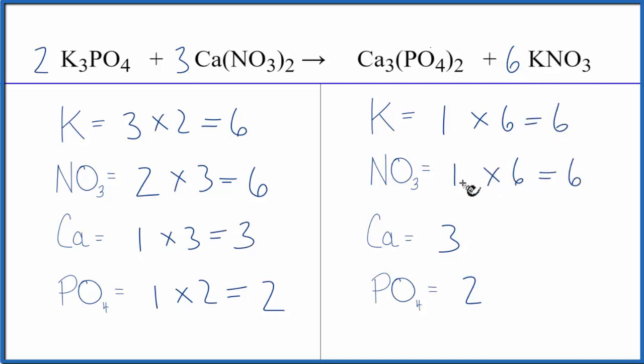This equation is balanced. You can see that it makes it a lot neater and saves time to count these polyatomic ions as one thing if they appear on both sides of the equation. It'll give you the same answer either way. This is just a little quicker. This is Dr. B with the balanced equation for K3PO4 plus Ca(NO3)2. Thanks for watching.